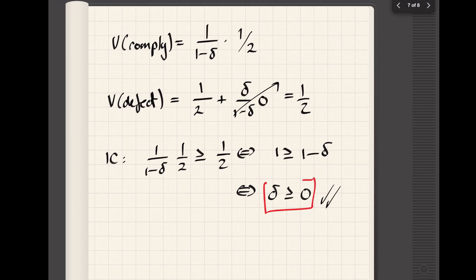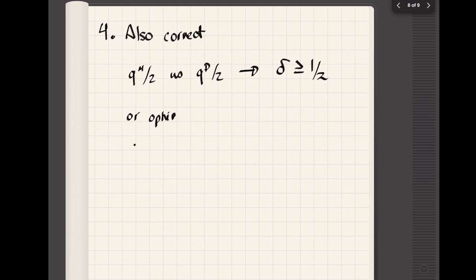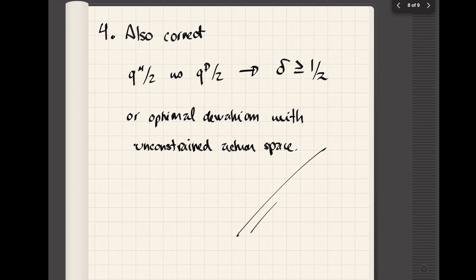That's the answer of the problem as stated. I will also consider correct solutions if you solve the problem the way we solve it in class by using half of the duopoly quantity instead of the competitive quantity, in which case you should have gotten delta greater equal to one half. Or if you did something a little bit more sophisticated and you actually figured out what would be the optimal deviation if the other firm was producing the monopolistic quantity, if you did either of those things you should be fine. And that's it, that was the exam.